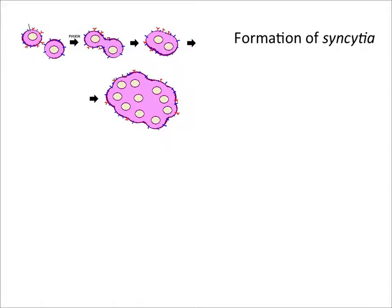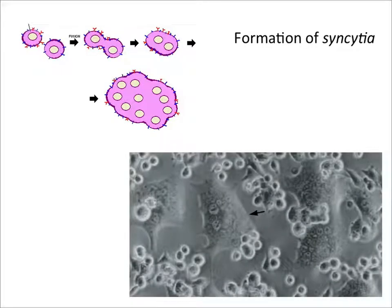Another kind of cytopathic effect is the formation of syncytia. A syncytium is simply a big cell with many nuclei formed when individual cells fuse — some viruses cause cell fusion. The end result is one giant cell with many nuclei. The cells aren't dying or breaking open as in the previous example, but they are undergoing changes induced by the virus. Here is a photograph of a culture infected with measles virus showing syncytia: a giant cell with many nuclei visible, surrounded by individual cells.